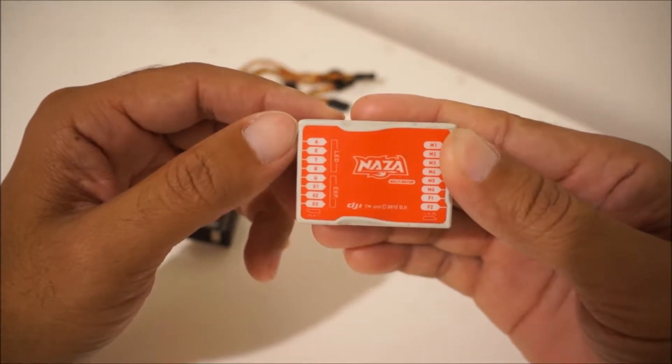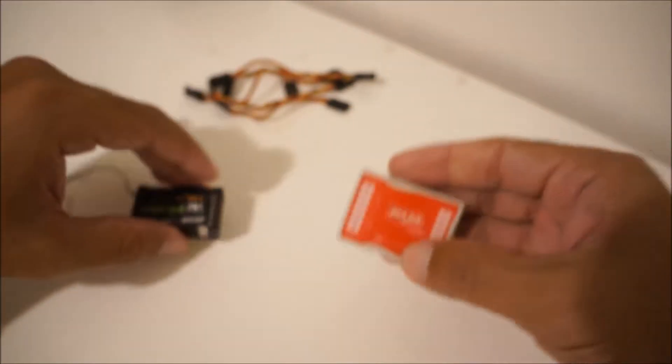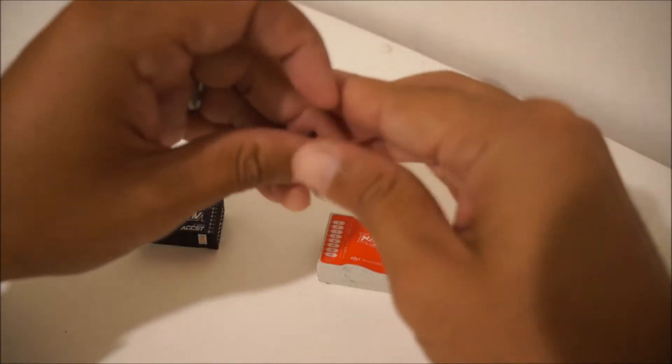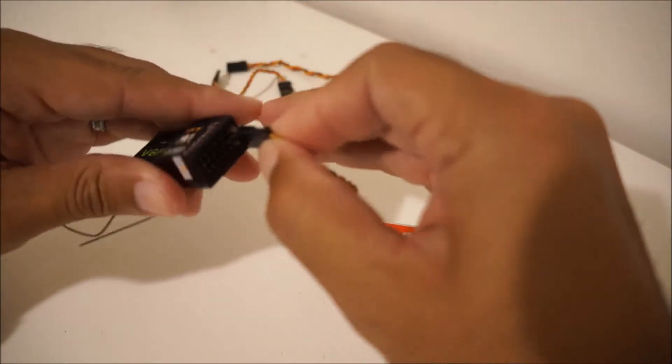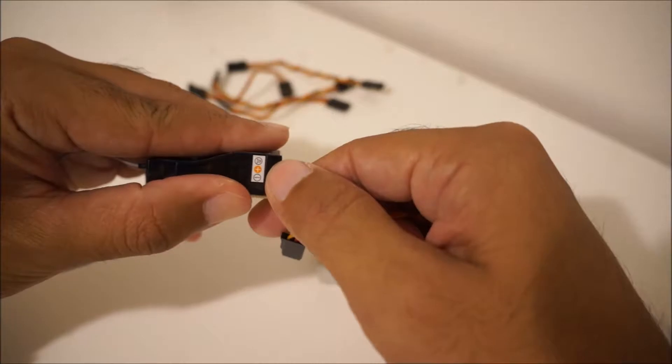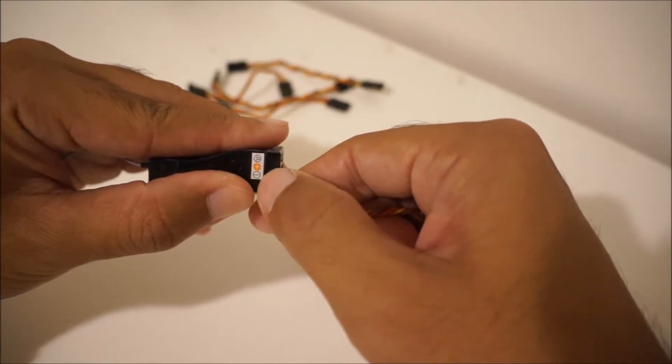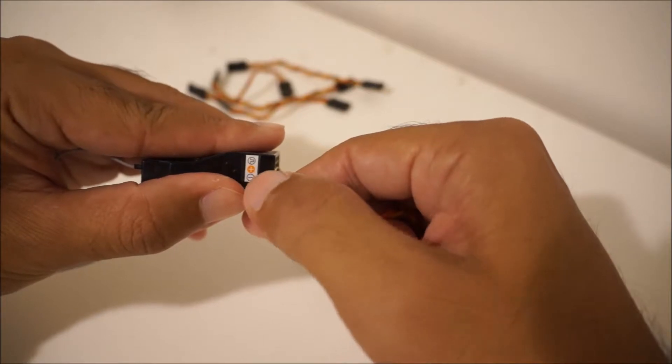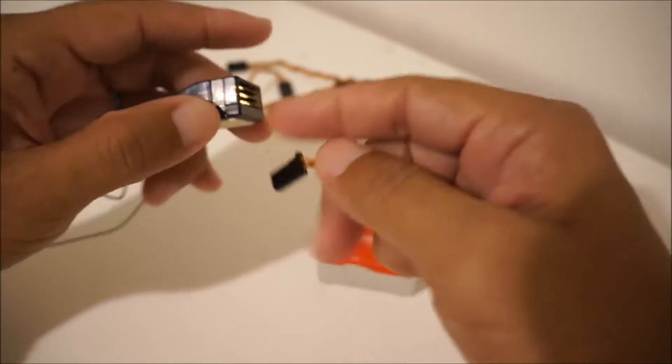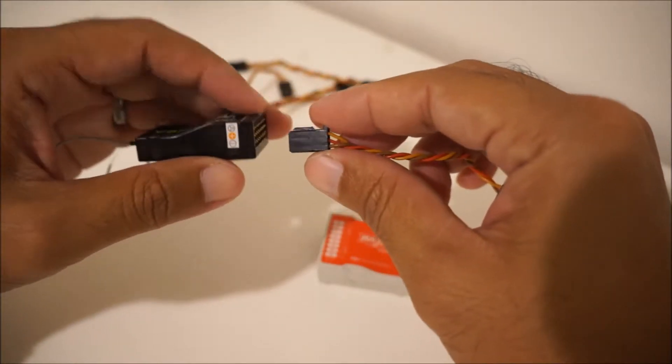So the first channel on the Naza is A, that means that's the aileron. So that would go, let's hook this up. And you got to be careful also, on my radio you can see here it has some symbols. The two symbols that you need to pay attention to is the plus and the minus, that means the positive and the negative. You want to make sure you don't get those two crossed because you might fry something.